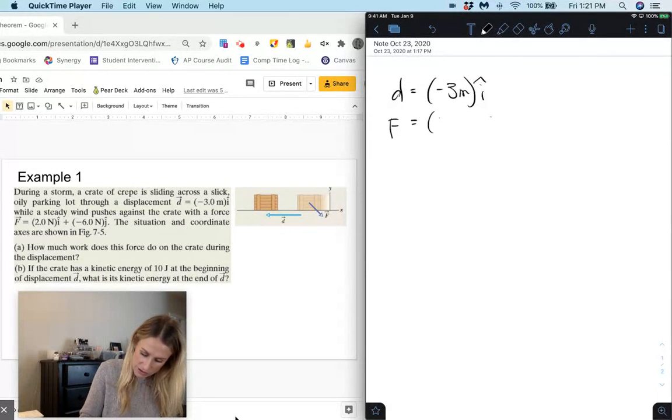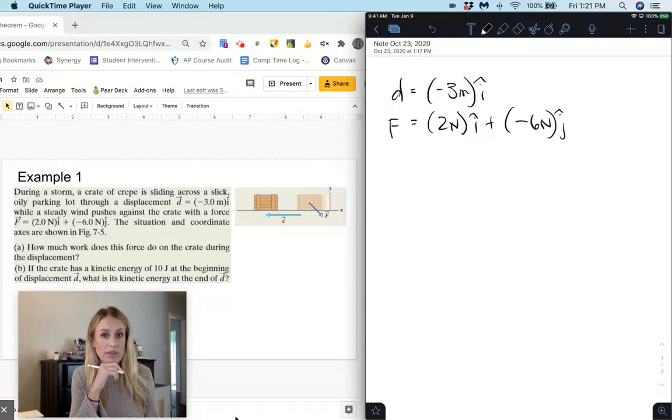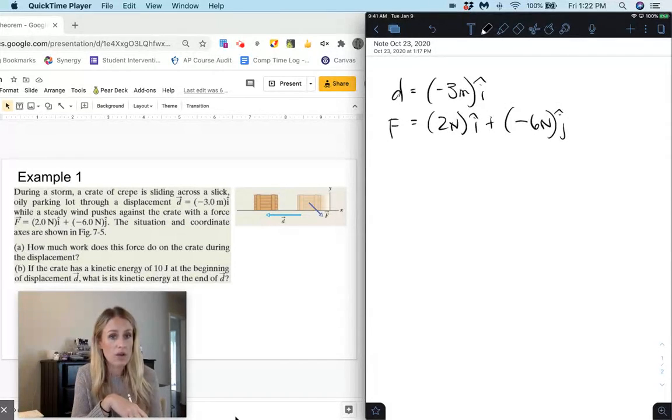So our force is 2 newtons i-hat plus negative 6 newtons j-hat. I put the figure on the side and then part a asks how much work does this force do on the crate during the displacement, and part b if the crate has a kinetic energy of 10 joules at the beginning of displacement d, what is the kinetic energy at the end of d?